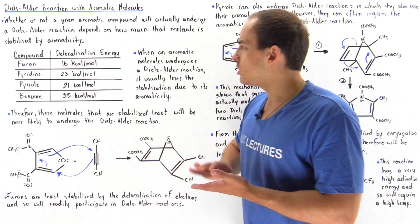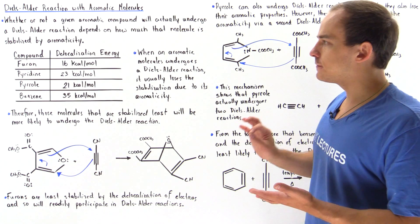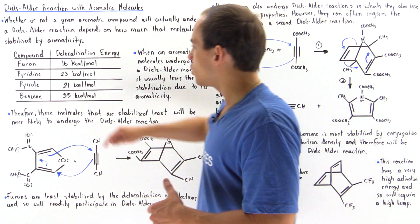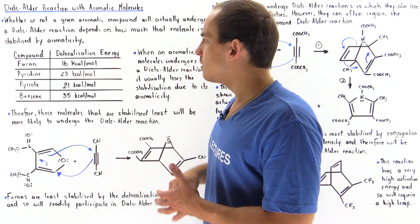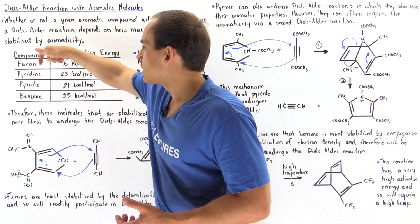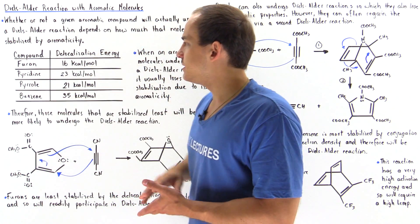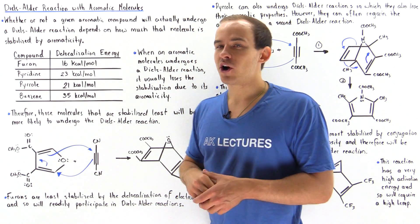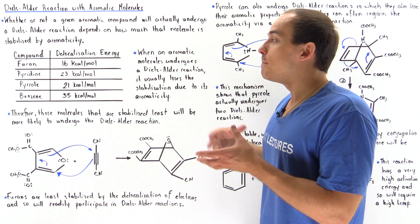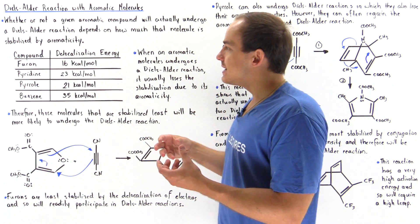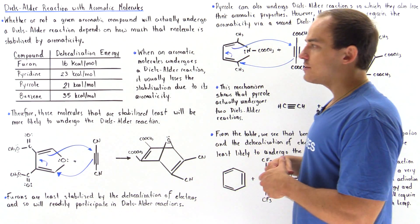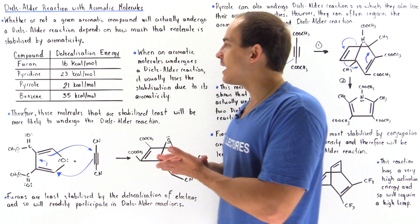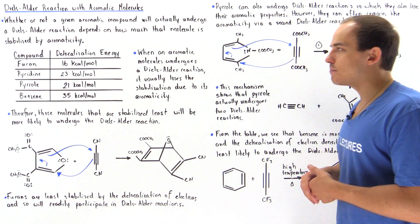In this table I've listed four different molecules and their delocalization energy values. Each one of these four molecules — furan, pyridine, pyrrole, and benzene — is stabilized by aromaticity, and the delocalization energy gives us the quantity of energy by which each one of these molecules is actually stabilized.